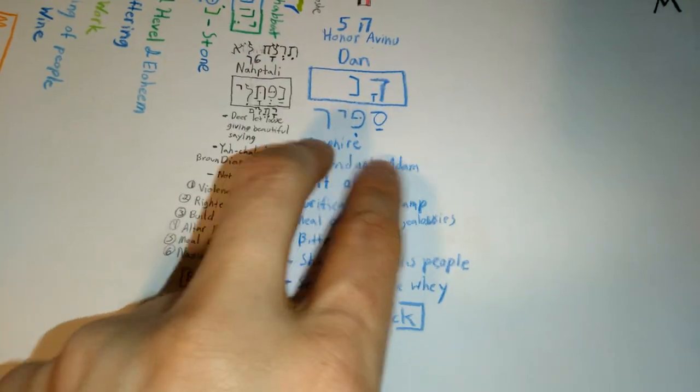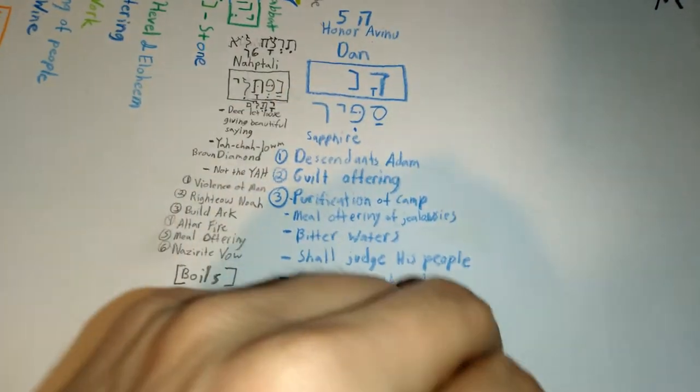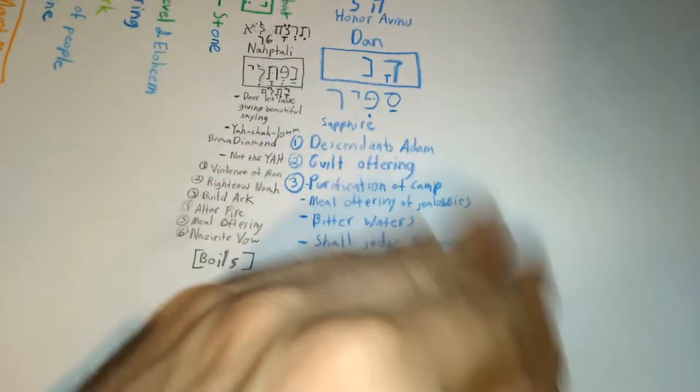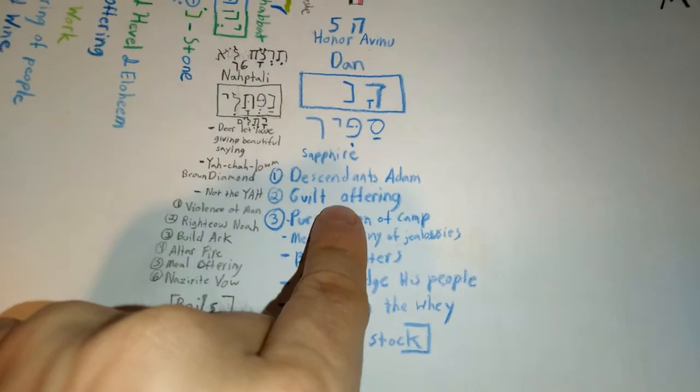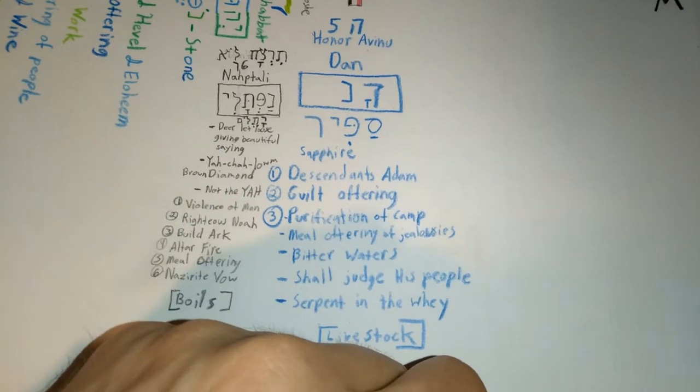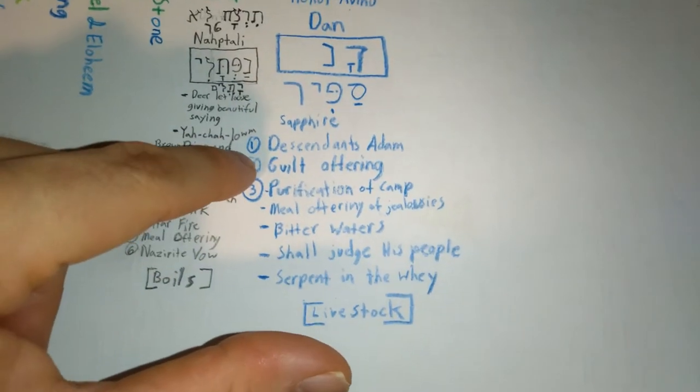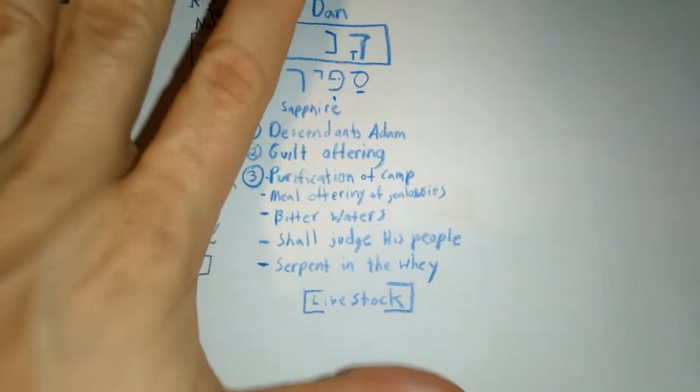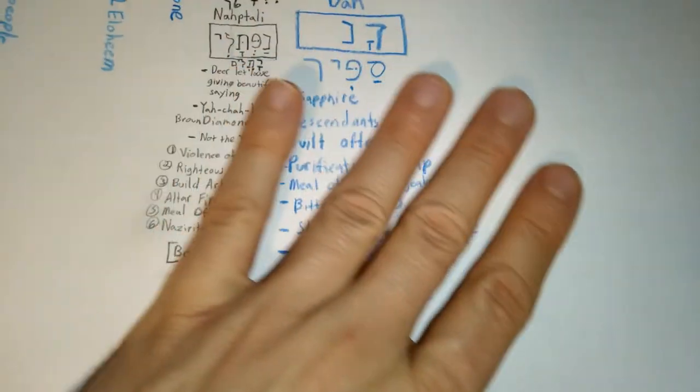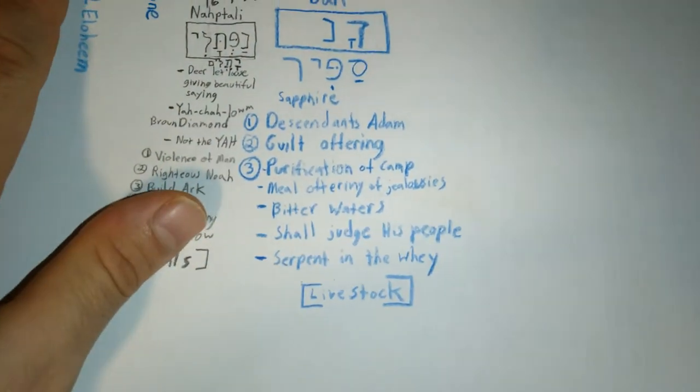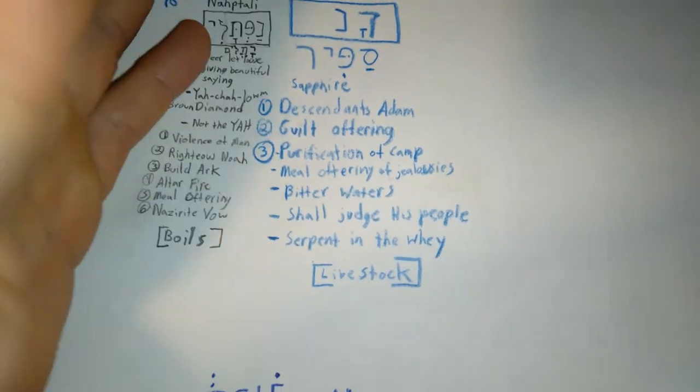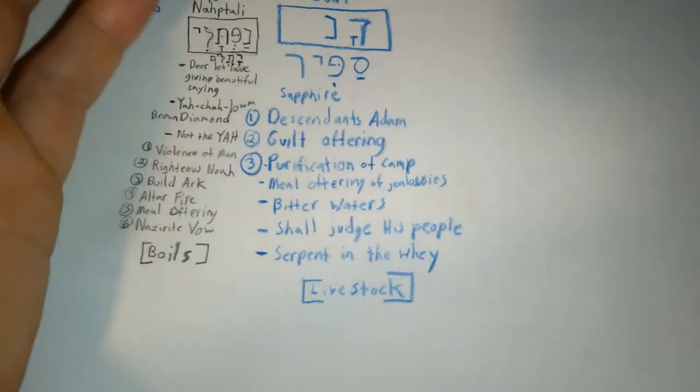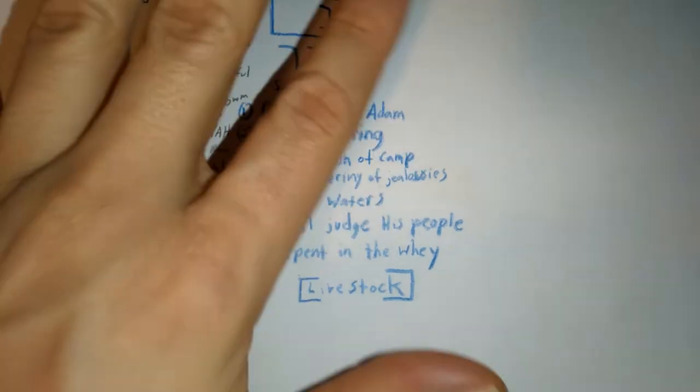So we have Dan. We have a Safir. Now, Safir is very special stone. It's a very pretty blue stone. And you want to get that stone if you can. The Descendants of Adam, obviously. And then guilt offerings. So very specific with Dan on guilt offerings. The purification of camps. The meal offering of jealousies. Bitter waters. Judging your serp of his people or whatnot. Serpent in the way. Something like that.